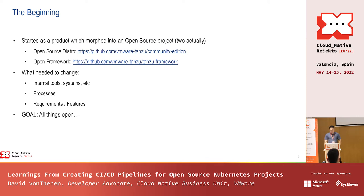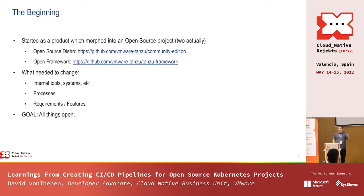What we ended up doing was taking that product, taking all of the source code, and creating two repos. The first repo was a framework — an open framework called Tanzu Framework — which provides a way for other people to create other Kubernetes distributions in a VMware-prescribed way. The project I work on is Tanzu Community Edition. It takes that framework, does all the wrapping around how we install, build, test, create pipelines, and deliver this open source edition to end users in the community.